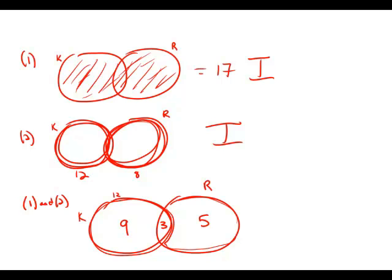If we combine the information, then we do have enough information to figure out the overlap region. And the overlap region, those are the people that are directors of both company K and company R. We have sufficient information to answer the question when the statements are combined. Answer choice C.